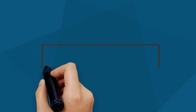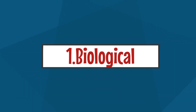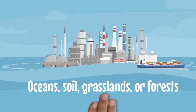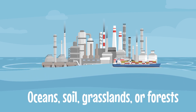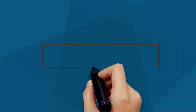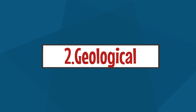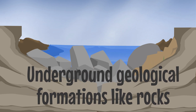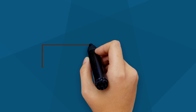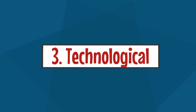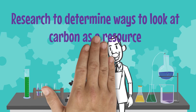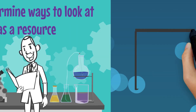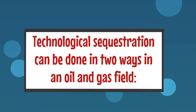There are three types of carbon sequestration. Number one: biological — the storage of carbon in biological reservoirs such as oceans, soil, grasslands, or forests. Number two: geological — carbon stored in underground geological formations like rock. Number three: technological — research work to determine ways to use carbon as a resource.